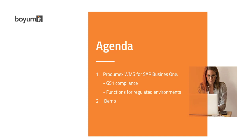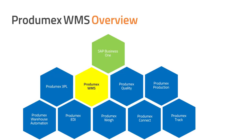I will also take you through a demo of the system. Produmex WMS consists of a core warehouse management application which is integrated transparently with SAP Business One, and which offers additional components or modules including the 3PL module for third-party logistics, a quality module, production capabilities, warehouse automation, EDI, weighing, connecting to devices, and connecting to tracking and tracing systems.